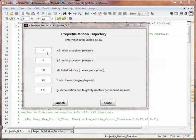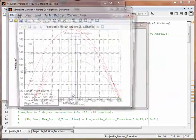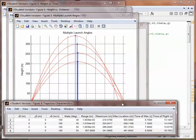And here's the front panel of my GUI, and I've already entered the five initial values. We'll click launch, and we'll get four figures.